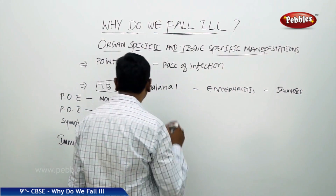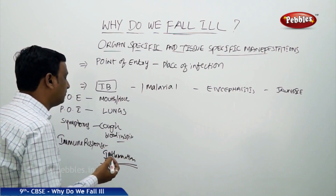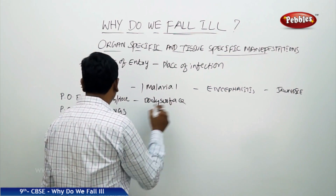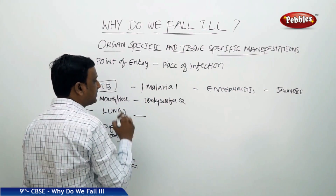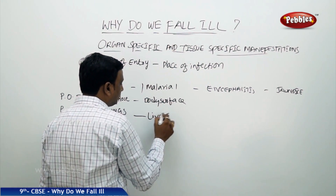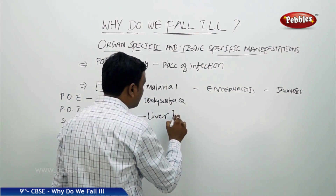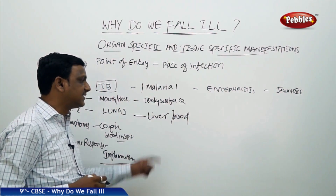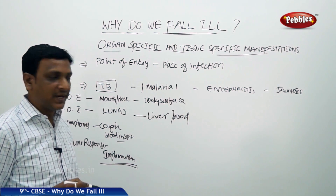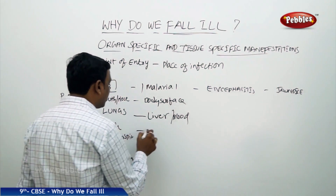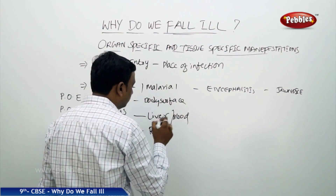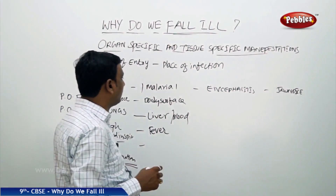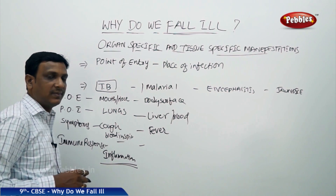Now the second example: malaria. The place of entry is any part of the body surface. The place of infection is the liver and blood. Blood cells are destroyed in large numbers — the malaria organism settles in the liver but spoils the blood cells. The symptoms are fever, weakness, and loss of weight, and there will also be some kind of immune response to malaria.